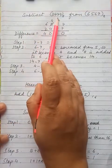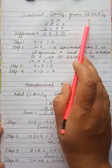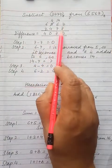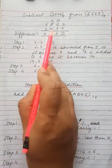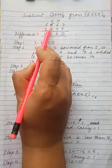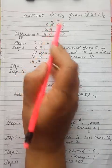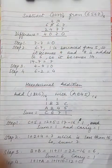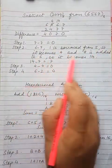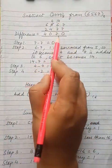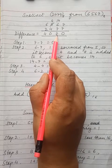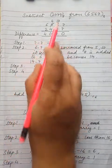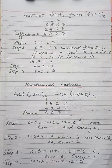Now take this example: subtract 2477 base 8 from 6567 base 8. Write 6567 on top and 2477 at the bottom. First step: 7 minus 7 is 0, written as it is. Now 6 minus 7 — 6 is a smaller number, so 1 is borrowed from the left side. That column becomes 5, then 5 minus 1 is 4. And here 6 is added with 8 — not 10, but 8 — so it becomes 14. 14 minus 7 is 7, which is less than 8, written as it is. Next: 4 minus 4 is 0, and 6 minus 2 is 4. So this is the final difference when we subtract these two octal numbers.